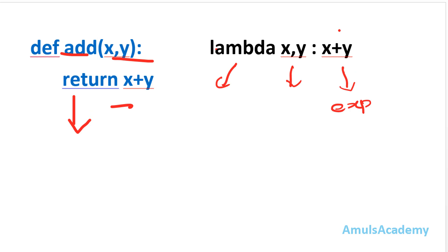When do we use lambda functions or anonymous functions? This function can be used when we need a function for a short period of time. It can also be used as arguments in higher-order functions. Higher-order functions are functions which use another function as arguments, so in that case we can use a lambda function as the argument.